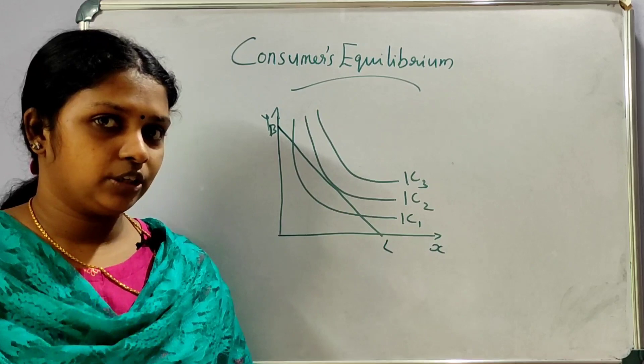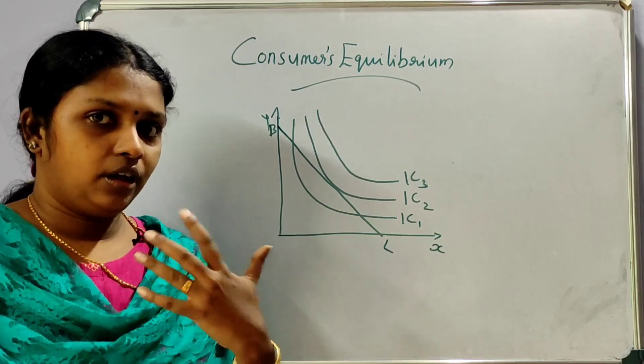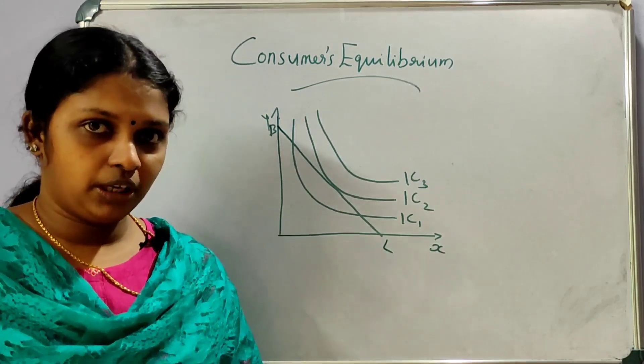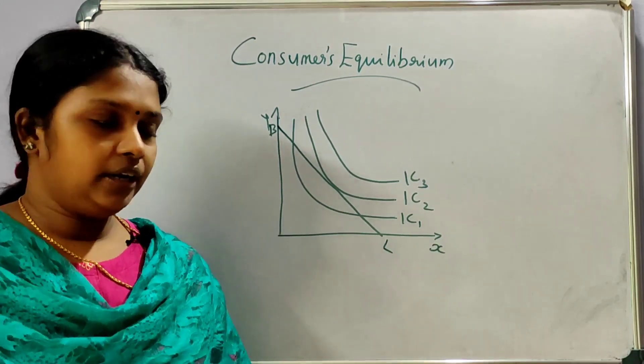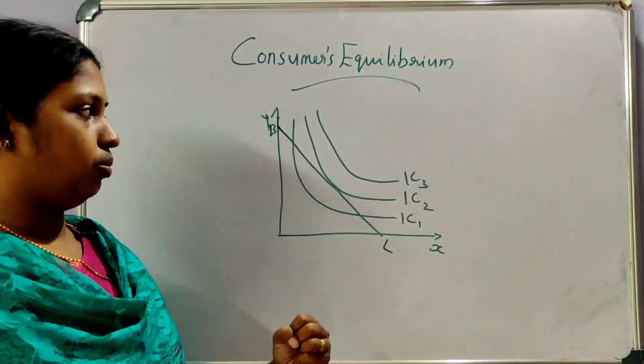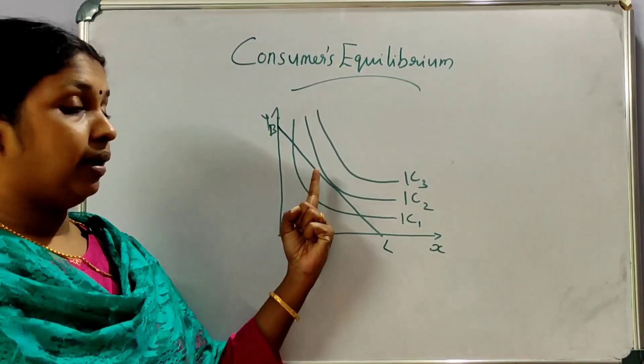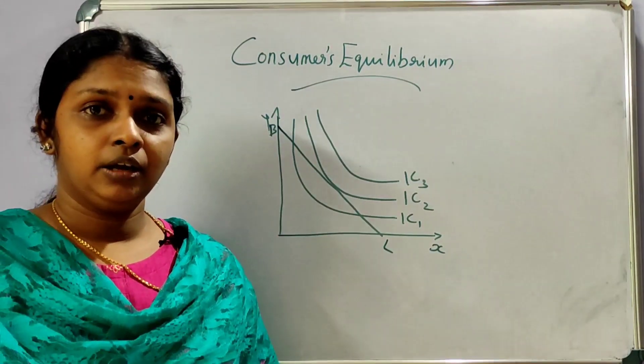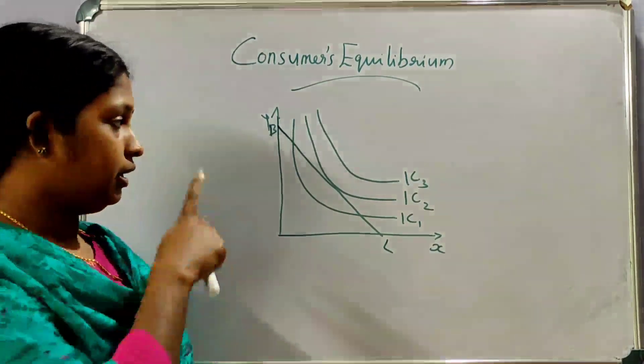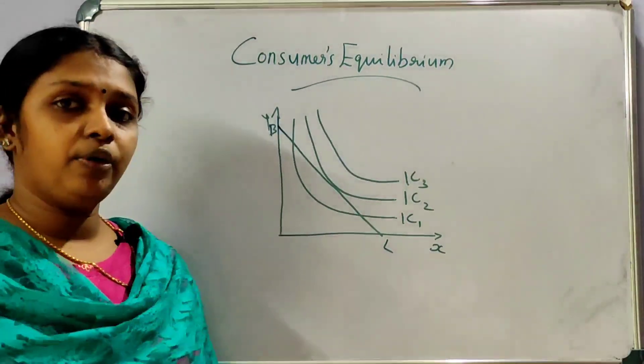Maximum satisfaction — if we have the motive and the budget, we can select the point on the indifference curve.